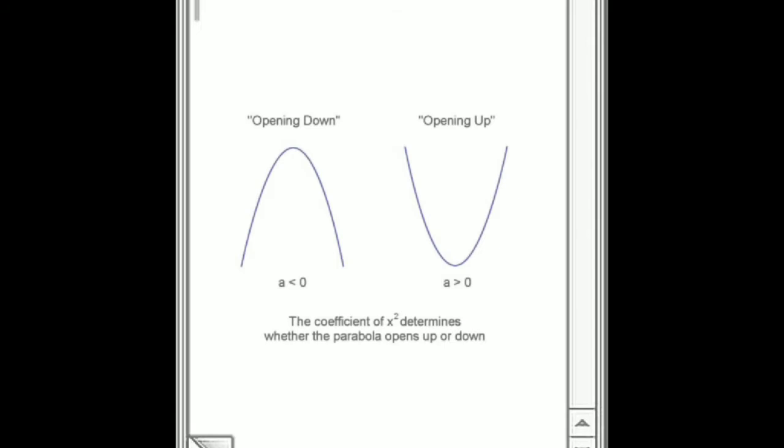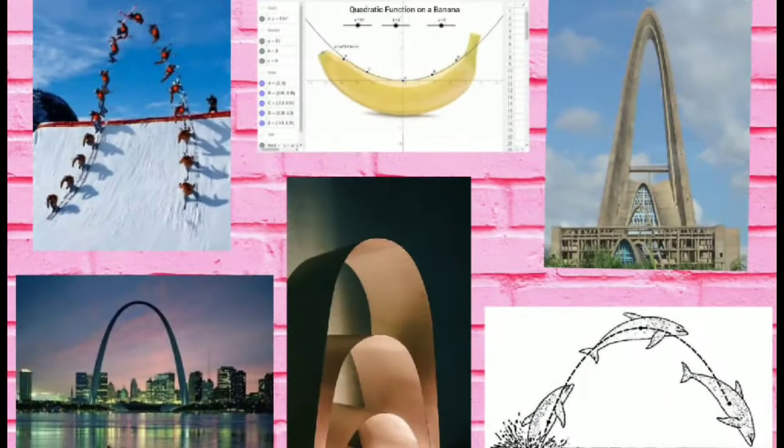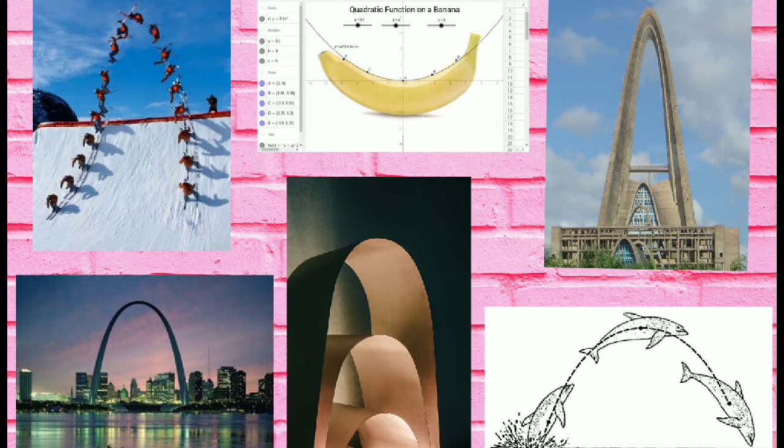These are the examples of parabola. For example, if a is greater than zero, the graph of the parabola opens upward. But if a is less than zero, the graph of the parabola opens downward. So these are the real-life models of parabola.